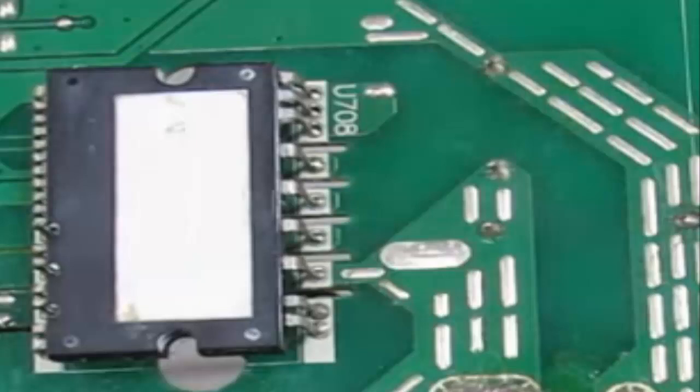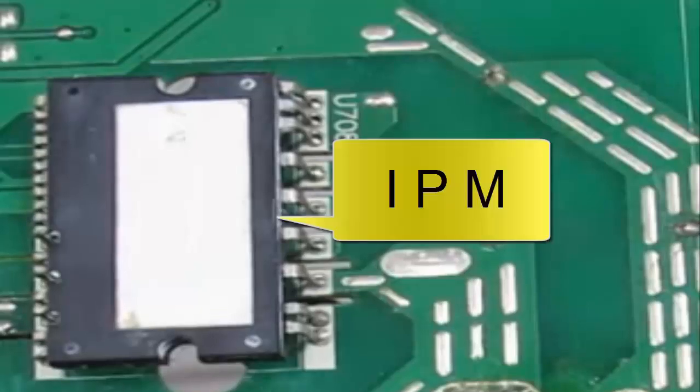In this video, we will explain how to perform a quick test of the IPM electronic module, which is used in inverter air conditioner boards to supply current to the compressor.